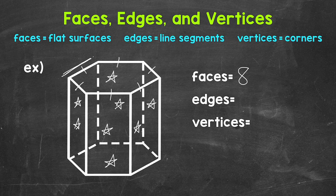Now let's move to the bottom, and we will start up front here. So seven edges, eight edges, nine edges, 10 edges, 11 edges, 12 edges. And then lastly, let's go around the hexagonal prism. So this is 13 edges, 14 edges, 15 edges, 16 edges, 17 edges, and 18 edges. So 18 total edges.